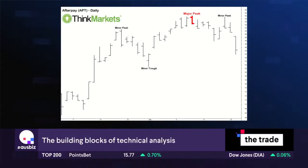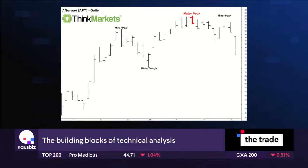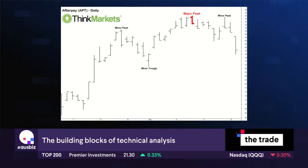I think everybody can get on a chart and identify that: a peak with two lower peaks on either side is a major peak. A major peak just means more resistance at that level going forward; a major trough means more support at that level going forward.